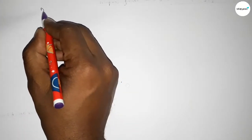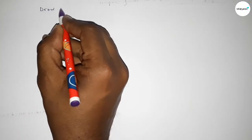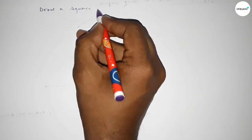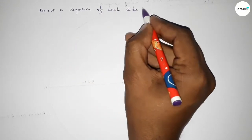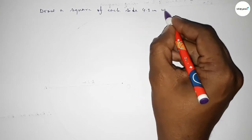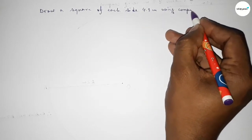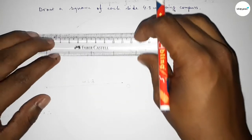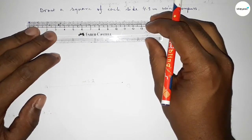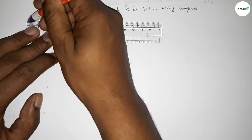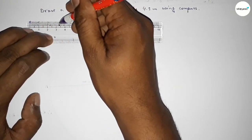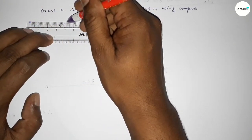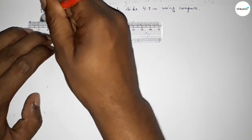Hi everyone, welcome to SI Share Classes. Today in this video we have to draw a square of side 4.3 centimeters using a compass. Let's start — first of all, drawing a line of length 4.3 centimeters: 0, 1, 2, 3, 4... 4.1, 4.2, 4.3. This is the 4.3 centimeter line.